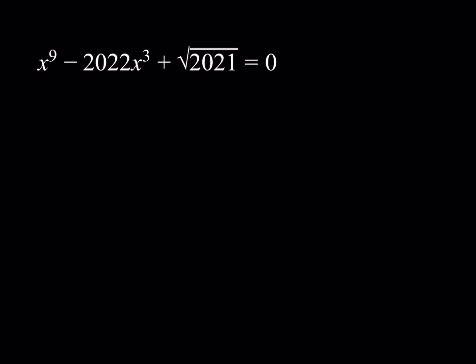So how do we proceed? You probably noticed that this equation can be turned into a cubic, but that's not what I mean by substitution — I'm going to be doing something more interesting than that. If you look at the terms and the coefficients, you notice that the constant term is the square root of 2021, which is not a perfect square. It can be factored into two primes — it's 43 times 47. And 2022 is one more than 2021, but one of them is a radical. So I'm going to call this number a, where a equals the square root of 2021. If I square a, I get 2021, and if I add one to it, I get 2022.